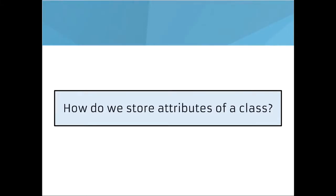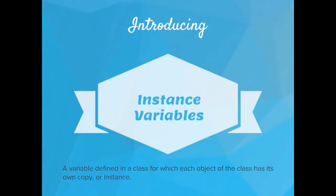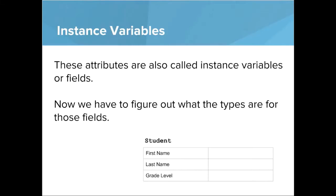Then we want to ask how do we store attributes of a class? To do that, we use instance variables. A variable defined in a class for which each object of the class has its own copy or instance. So these attributes are also called instance variables or fields.